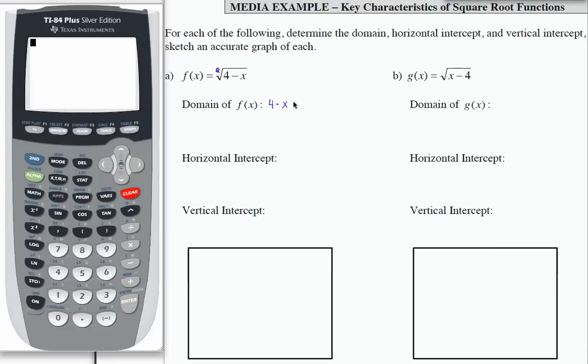So the domain is going to be 4 minus x greater than or equal to zero. I want whatever is under the radical to be greater than or equal to zero. To solve this inequality, I'm going to add x to both sides. That's going to give me 4 is greater than or equal to x. If I rewrite the order on this inequality, I can say that is the same thing as x is less than or equal to 4. So this is one way to write the domain for this function.